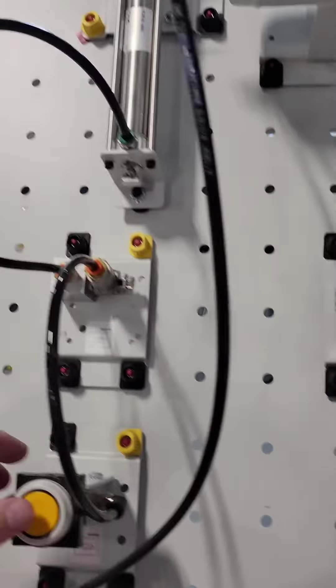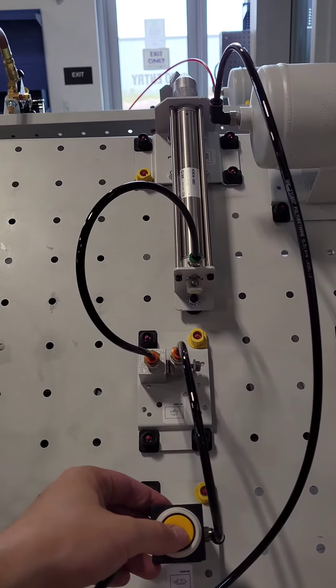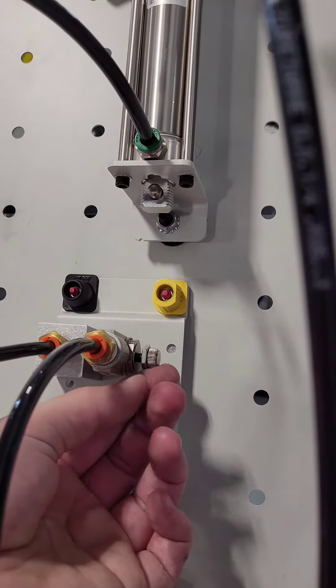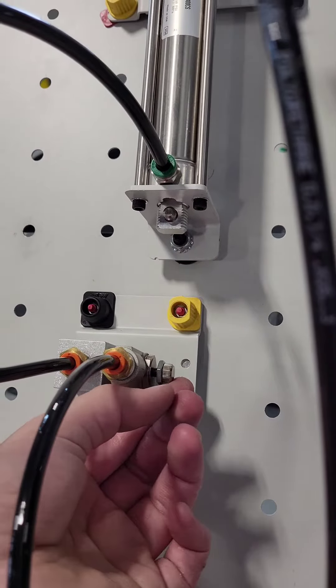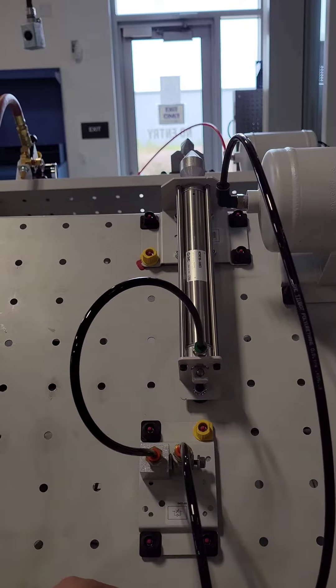meter looks good. We're going to press the button and notice the speed at which the cylinder returns. We're going to adjust our flow control valve, and now that we do that, look at the difference in time - it slows